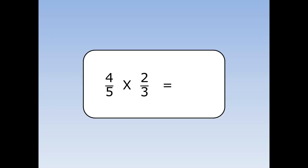4 fifths times 2 thirds. We times the top by the top: 4 times 2 is 8. And the bottom by the bottom: 5 times 3 is 15. So the answer is 8 fifteenths.